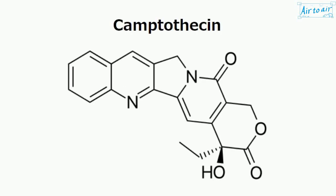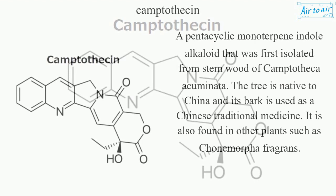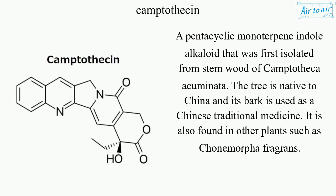Camptothecin. A pentacyclic monoterpene indole alkaloid that was first isolated from stem wood of Camptotheca acuminata. The tree is native to China and its bark is used as a Chinese traditional medicine. It is also found in other plants such as Chonimorpha fragrans.